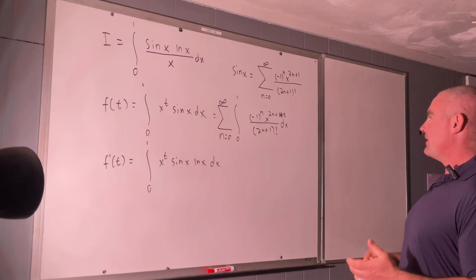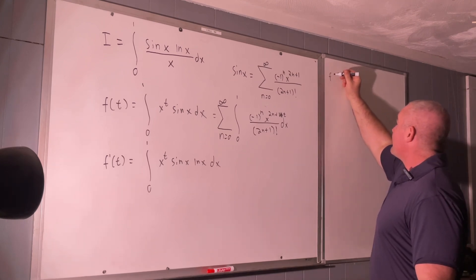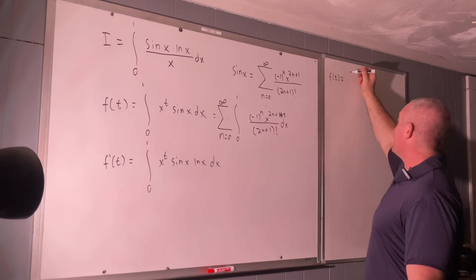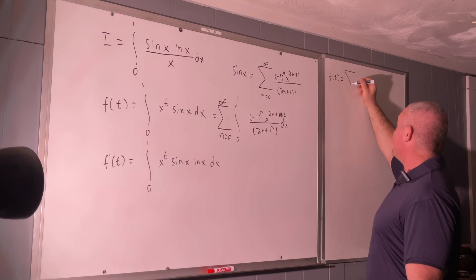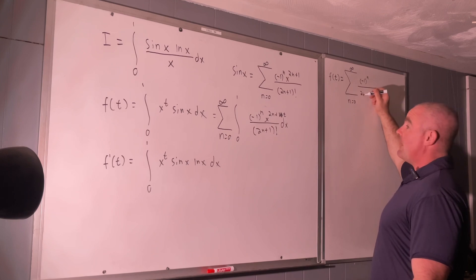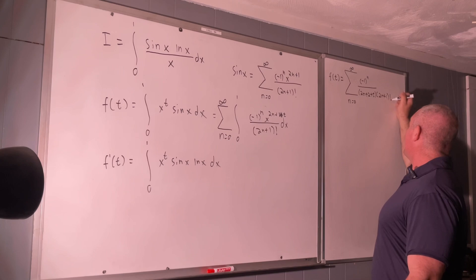And then, integrating x to the 2n plus 1 plus t from 0 to 1 will give you 1 over 2n plus 2 plus t. So, our final representation for f of t expressed as a sum is just going to be the sum as n goes from 0 to infinity of negative 1 to the n over 2n plus 2 plus t times 2n plus 1 factorial.